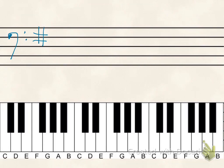So, if you see a G here and no figures below it at all, no numbers, that means it's a root position triad.